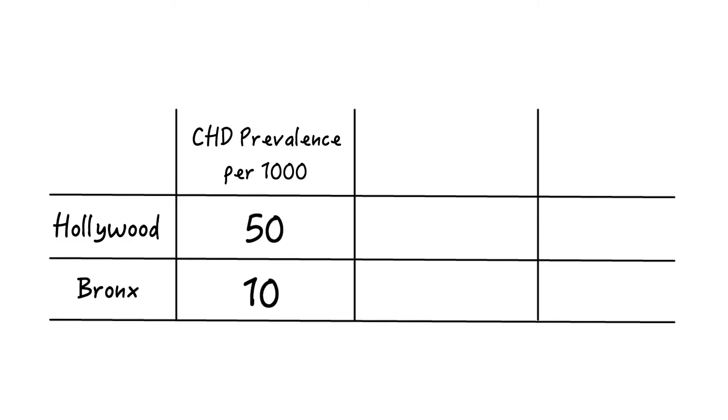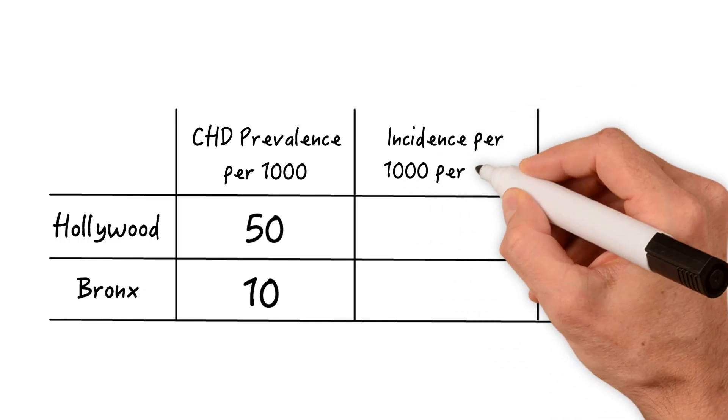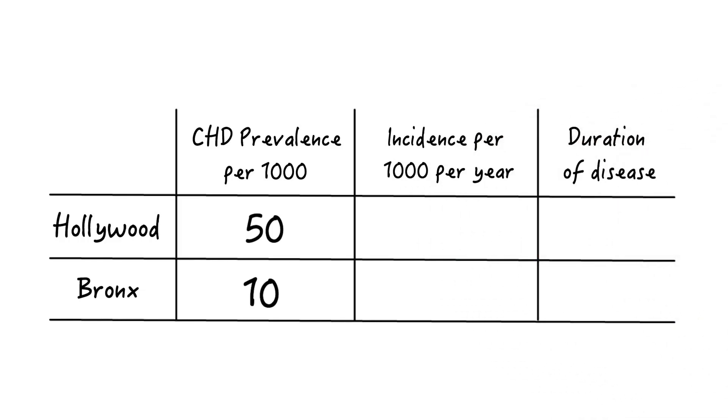So to the person who's not familiar with the fact that prevalence is not a measure of risk, but rather a measure of the burden of the disease, it looks like folks from Hollywood are at an increased risk of CHD. But that conclusion is not true at all here. Let's look at the incidence rates and duration of disease in both locations.